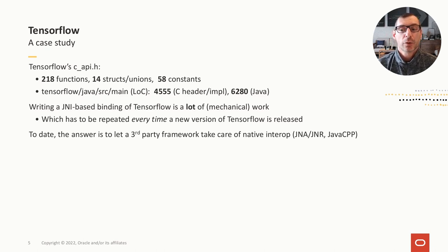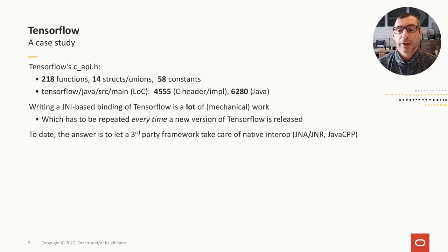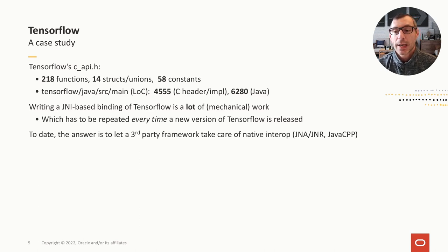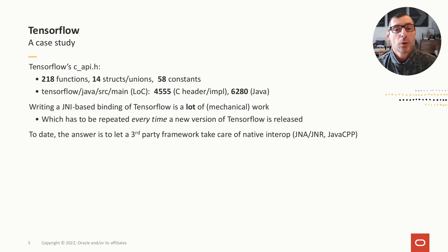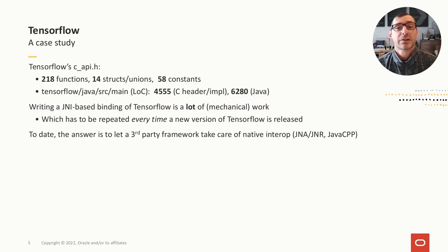This creates an obvious maintenance problem. All this JNI code is difficult to review and secure, and needs to be updated every time the TensorFlow library changes. It's not surprising that the Java ecosystem has come up with tools to automate JNI code generation. The current version of the TensorFlow API is based on one of these frameworks, leaving Java developers to choose between writing lots of C/C++ code or depending on a third-party framework, each with their own maintenance and safety issues.